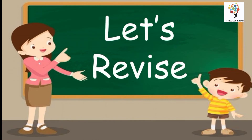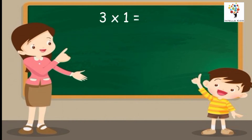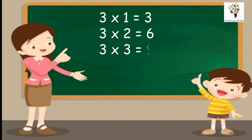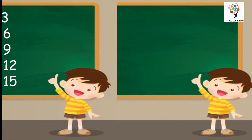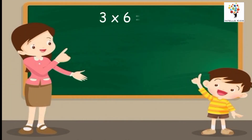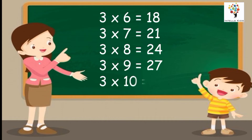Let's revise. Three ones are three. Three twos are six. Three threes are nine. Three fours are twelve. Three fives are fifteen. Three sixes are eighteen. Three sevens are twenty-one. Three eights are twenty-four. Three nines are twenty-seven. Three tens are thirty.